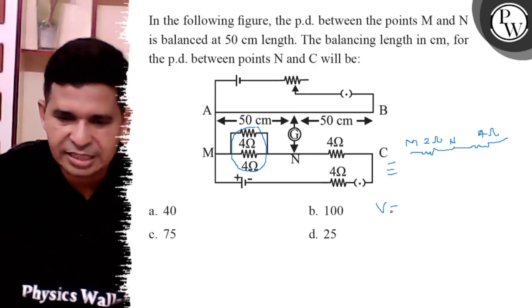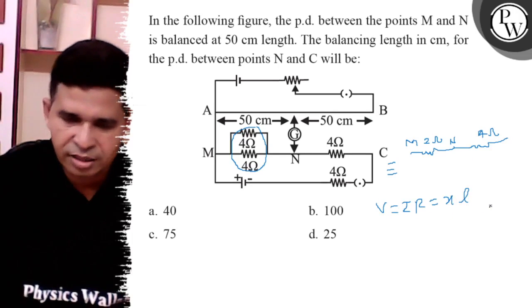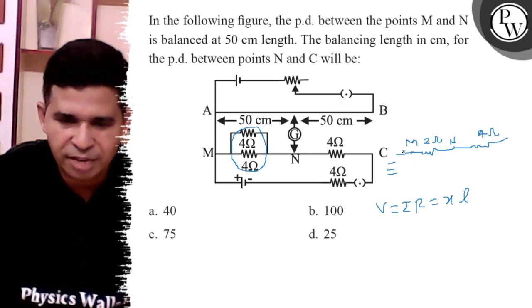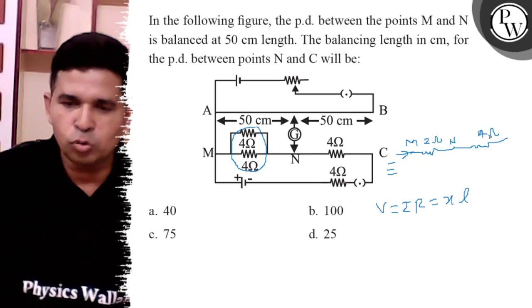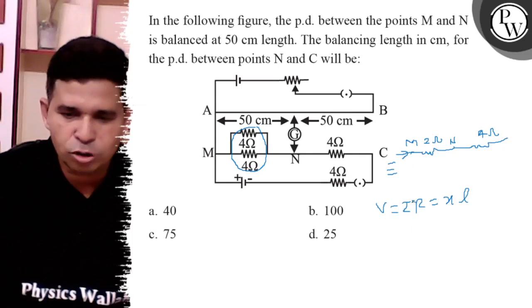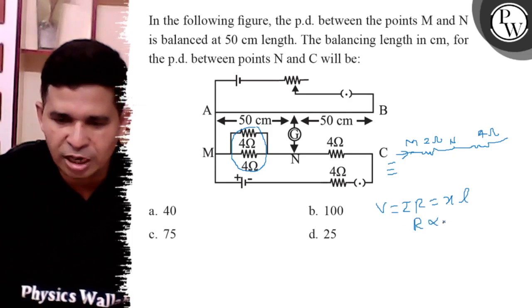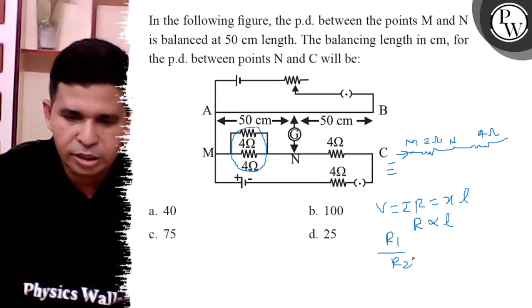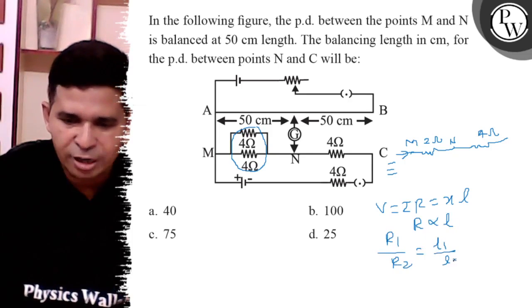We know that V equals I R, and I R equals X L1. So I is constant in series because the same current is flowing in 2 Ohm and 4 Ohm. So I is constant, therefore R is proportional to L. So R1 upon R2 equals L1 upon L2.